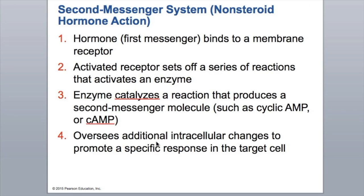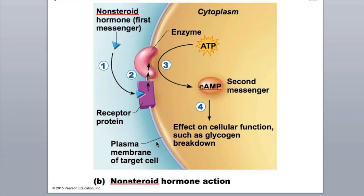The second mechanism is the second messenger system, or non-steroid hormone action. These are hormones that cannot pass through the cellular membrane, so they bind to a receptor on the cellular membrane, and that receptor sets off a series of reactions that activate an enzyme within the cell. That enzyme then produces a second messenger within the cytoplasm of the target cell that affects the function of that cell. So the hormone doesn't actually go into the cell, but it affects the outside of the cell to change what's happening on the inside.